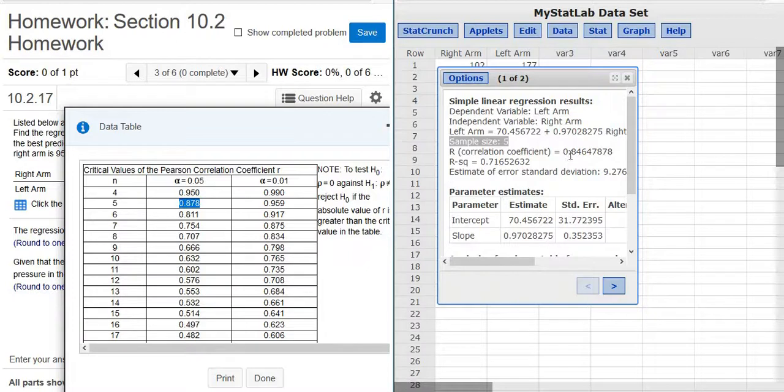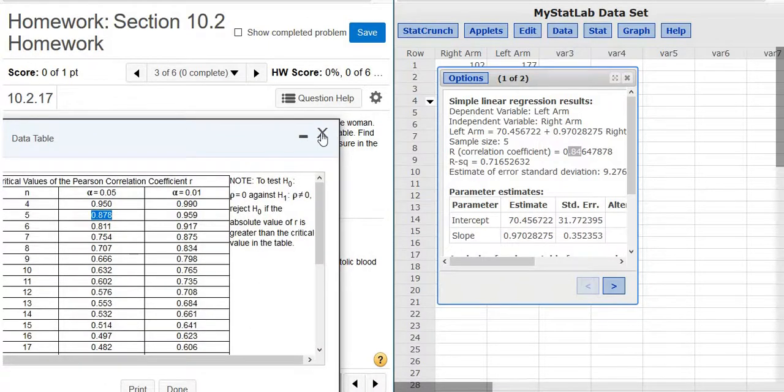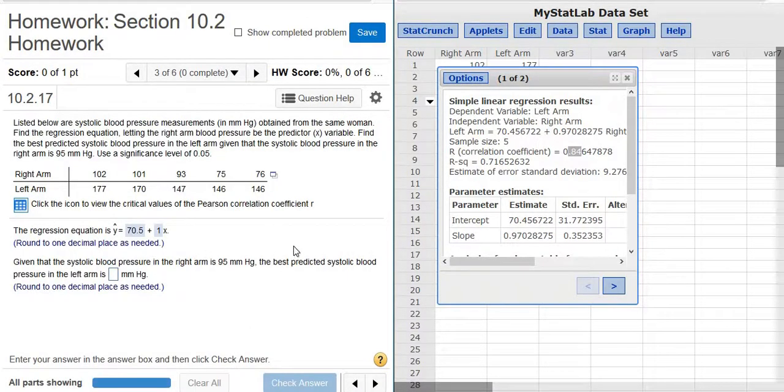So our R is 0.846, so it's smaller. So R is not significant, right? So it's not significant in this case. That means we're not going to use the line to make the prediction. We're going to use the mean of the Y values.